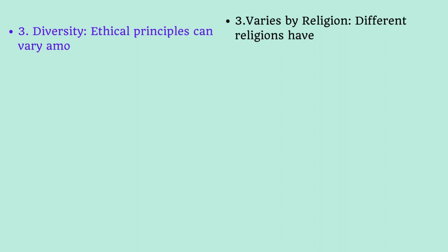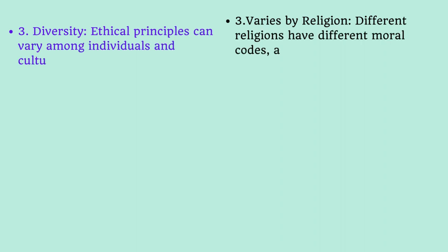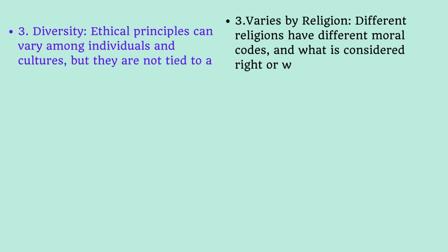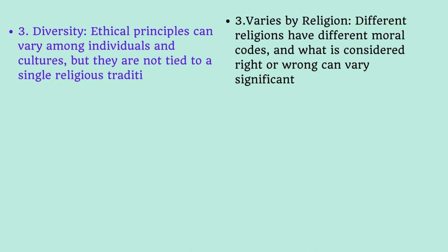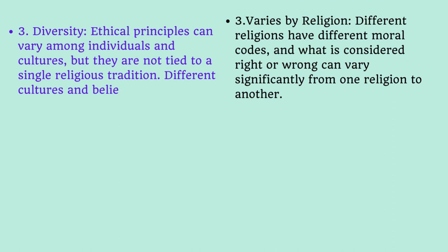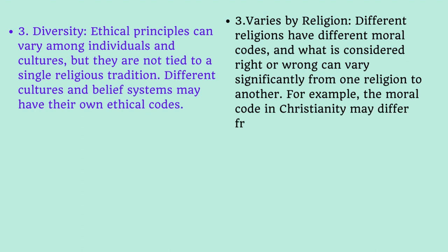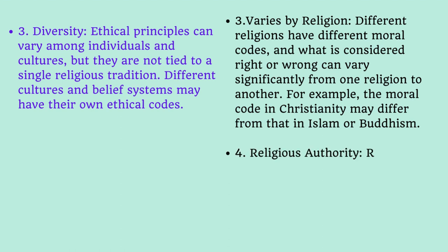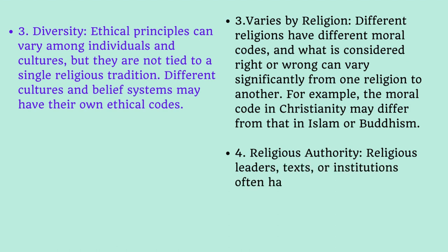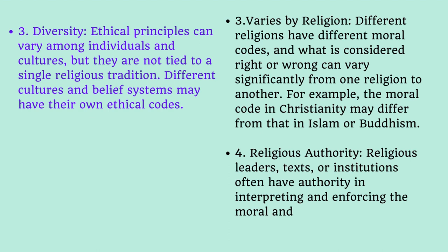Moving to diversity: ethical principles can vary among individuals and cultures, but they are not tied to a single religious tradition. Different cultures and belief systems may have their own ethical codes. Whereas in religion, different religions have different moral codes, and what is considered right or wrong can vary significantly from one religion to another. For example, the code in Christianity differs from Islam or Buddhism.